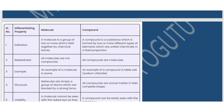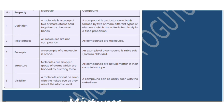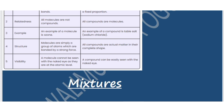All molecules are not compounds, but all compounds are molecules. An example of a molecule is ozone, and an example of a compound is table salt, sodium chloride. Molecules are simply a group of atoms bonded by a strong force, while all compounds are matter in their complete shape. A molecule cannot be seen with the naked eye as it is at the atomic level, but a compound can be easily seen with the naked eye.